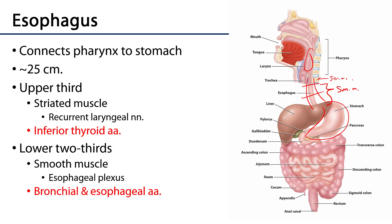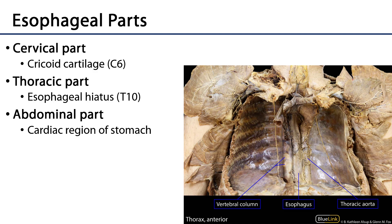The first part of the esophagus is the cervical part, not pictured here. It runs from the laryngopharynx, which is transitioning into the esophagus at the opening of the esophagus at approximately the level of the cricoid cartilage C6, which then at the root of the neck transitions into the thoracic part of the esophagus.